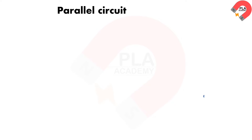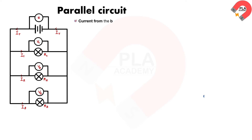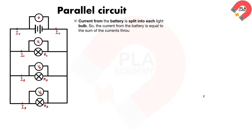Parallel circuit. In a parallel circuit, the current from the battery is shared by each component, and the potential difference across each component is the same and equals the EMF of the battery. The diagram shows three light bulbs connected in parallel with a battery. The current from the battery I_T is split into each light bulb, so I_T equals I_1 plus I_2 plus I_3.